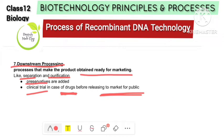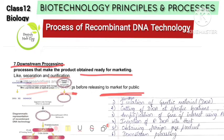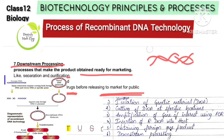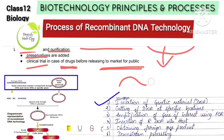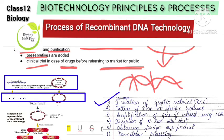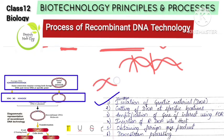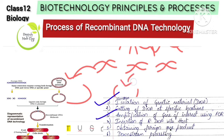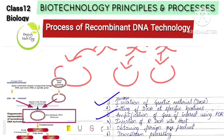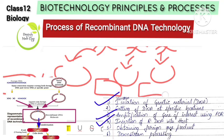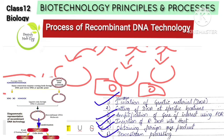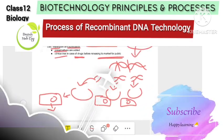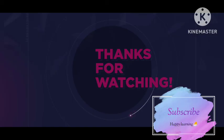So, to summarize the steps in recombinant DNA technology: first, extract DNA from cells; second, cut DNA with restriction endonucleases at specific locations; third, amplify using PCR to produce millions of copies; fourth, attach to vectors to form rDNA; fifth, insert into host cells; sixth, maintain host cells and express the gene; and finally, downstream processing for marketing. I hope you understood the process. Do subscribe for more such videos.